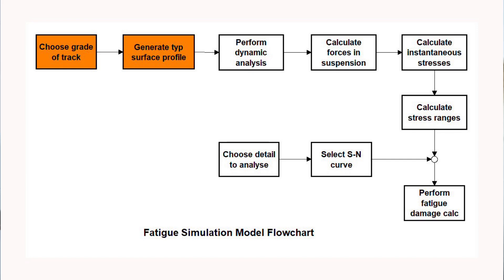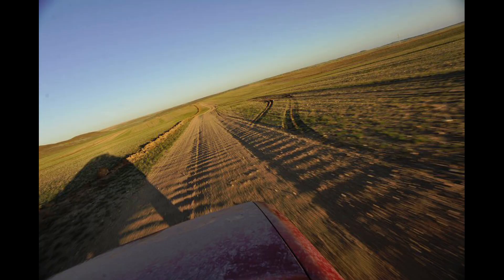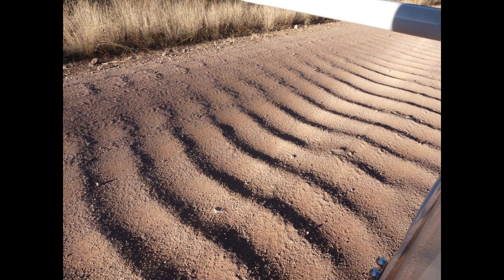I'm now going back to the flowchart for the simulation method, this time going along the top branch, which is all to do with performing a dynamic analysis and calculating the stress range used for the fatigue analysis. The first two boxes on the top left are to do with selecting a track and generating the surface profile. Roads are extremely complicated things with infinite variation. Something like a corrugated road is a very particular example with surface ripples of essentially one wavelength. But normal roads are made up of numerous components — from short-term ripples of quite small amplitude right through to long-wavelength undulations with much higher amplitude.